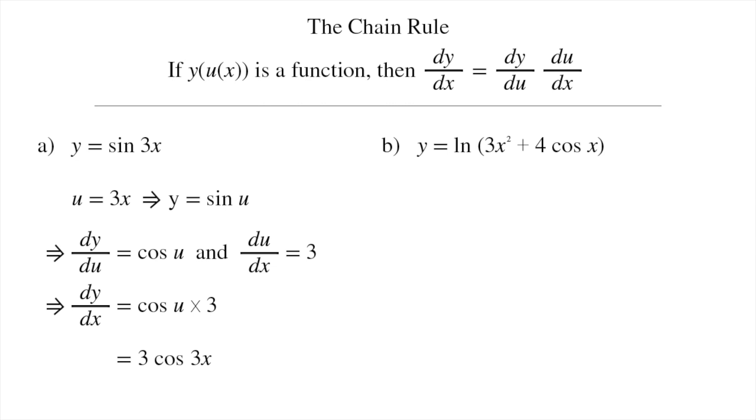We start by noting that y = ln(u), where u = 3x² + 4cos(x). Then dy/du equals 1/u, which is something we discussed in a previous video. Du/dx is also something quite straightforward to calculate, since we know how to differentiate powers of x and the cosine function. So we get 6x - 4sin(x).